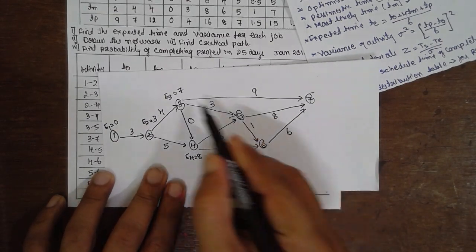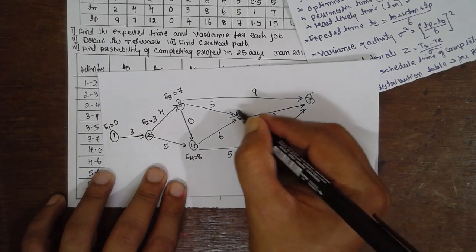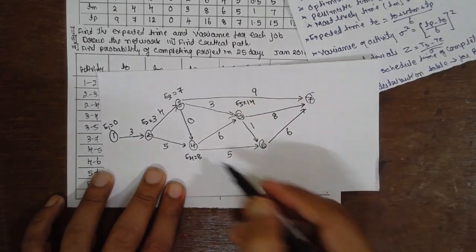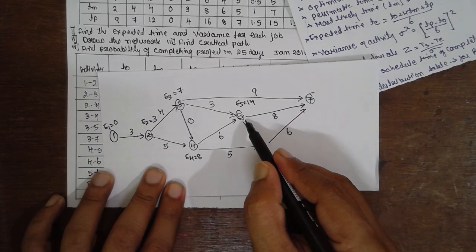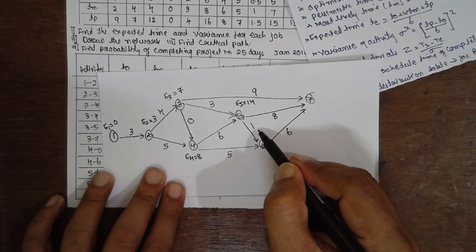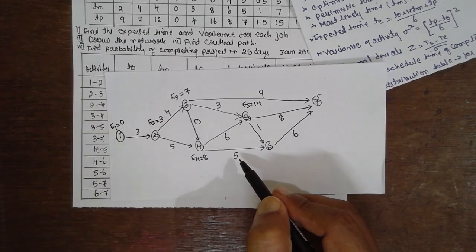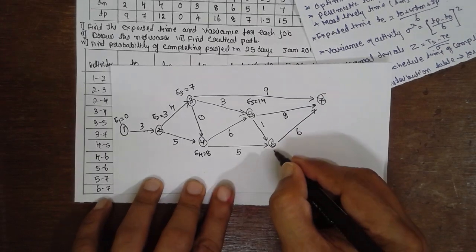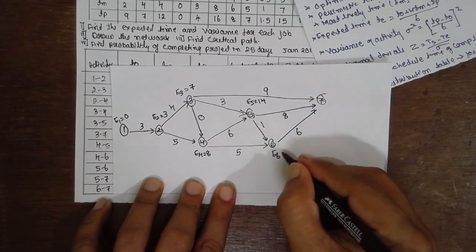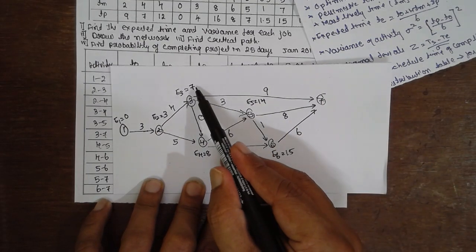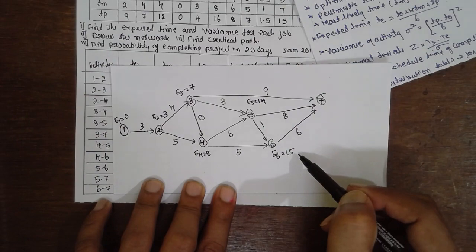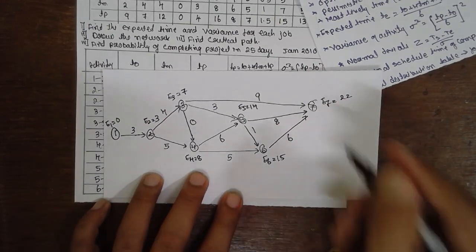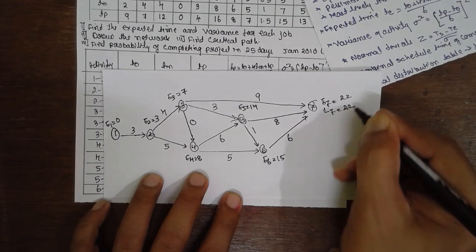Now again there is a junction here. 7 plus 3 is 10. 8 plus 16. You have to go for 8 plus 16. E5 equals 14. Next, again there is a junction. 14 plus 1 or 8 plus 15. Which one we have to prefer? We have to prefer 14 plus 1. E6 equals 15. Now whether I have to go for 7, 14, or 15? 15. Now 15 plus 6 is 22.